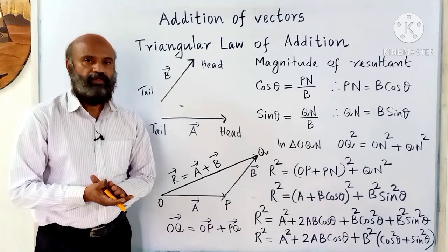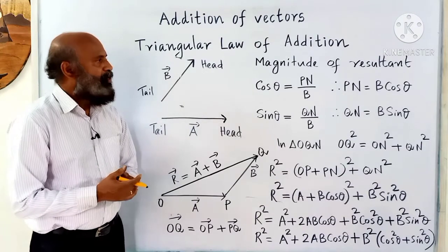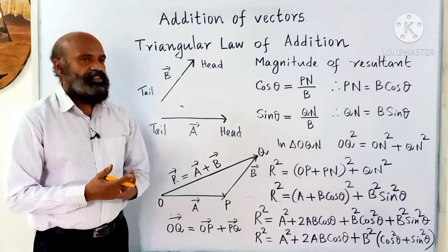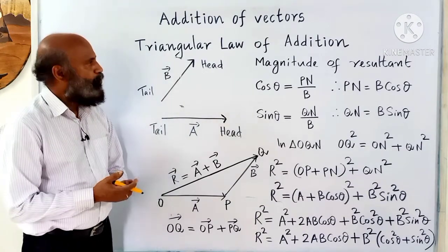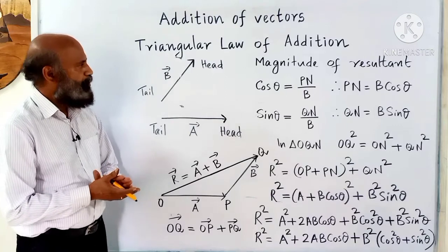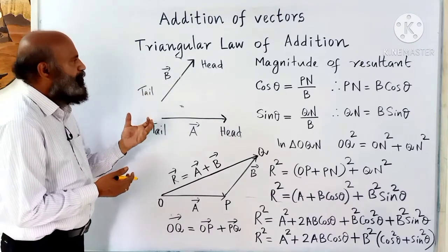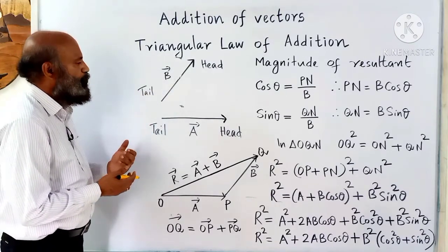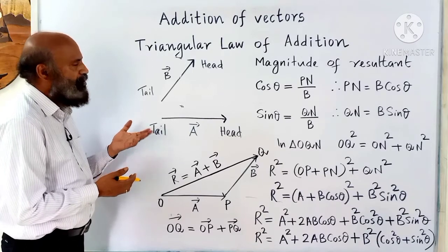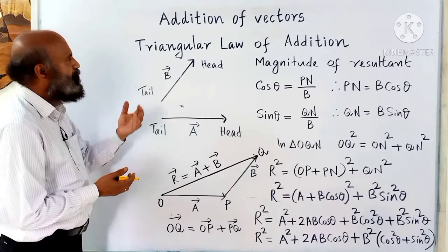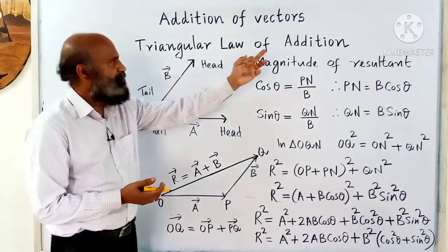Vectors have both magnitude and direction, so two vectors cannot be added by the method of ordinary algebra. For adding two vectors there are different methods — one of which is the triangle law of addition.